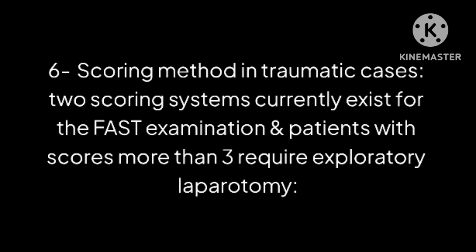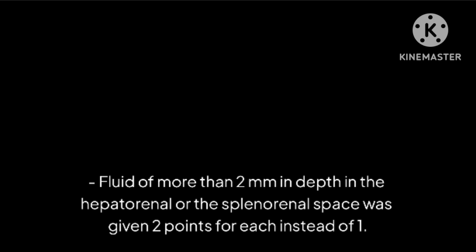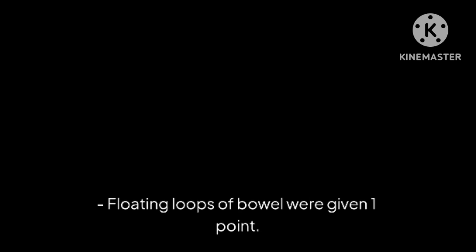Method 6: Scoring method in traumatic cases. Two scoring systems currently exist for the FAST examination, and patients with scores more than 3 require exploratory laparotomy. A. First scoring system: one point is assigned to each of the five anatomic sites in which free fluid is detected during the FAST scan, with a score ranging from 0 to 8. No fluid equals 0; right upper quadrant hepatorenal (Morrison's pouch) equals 1; left upper quadrant splenorenal and lesser sac equals 1; right lower quadrant right paracolic gutter equals 1; left lower quadrant left paracolic gutter equals 1; and pelvis equals 1. Fluid of more than 2 millimeters in depth in the hepatorenal or splenorenal space is given two points each instead of one. Floating loops of bowel are given one point.